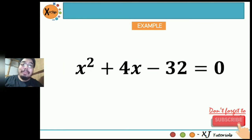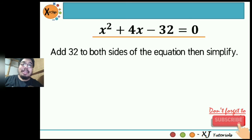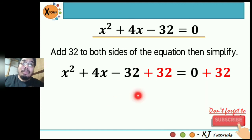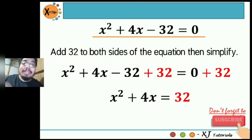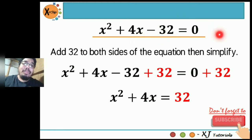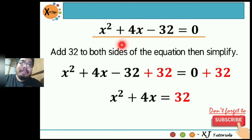The first thing we need to do is add 32 to both sides of the equation, then simplify. So x squared plus 4x minus 32 plus 32 equals zero plus 32. The 32 will cancel on the left side, giving us x squared plus 4x equals 32. This step is about moving the constant term to the right side of the equation. When moving a term to the right side, you need to change its sign — so negative 32 becomes positive 32.